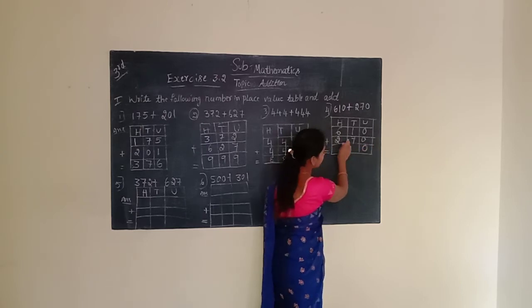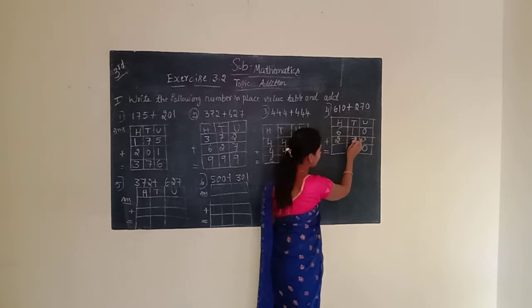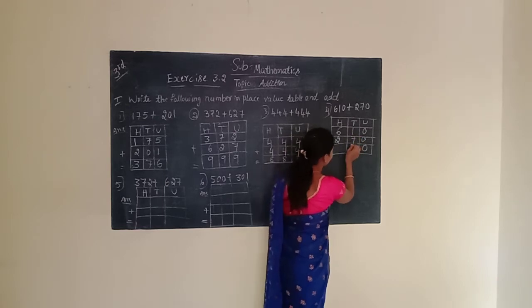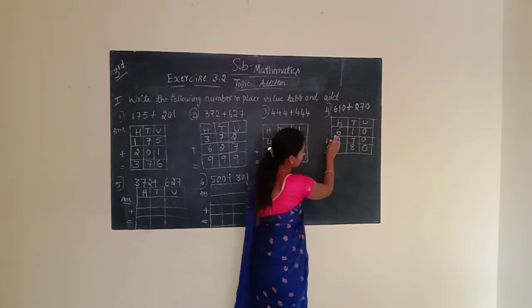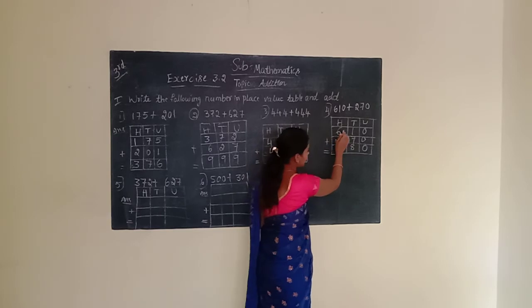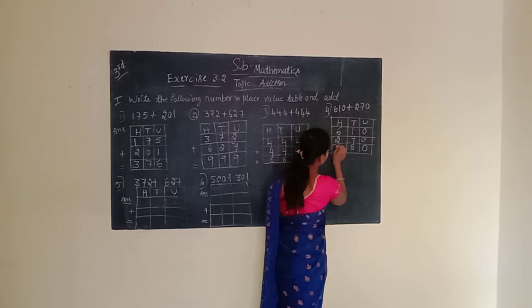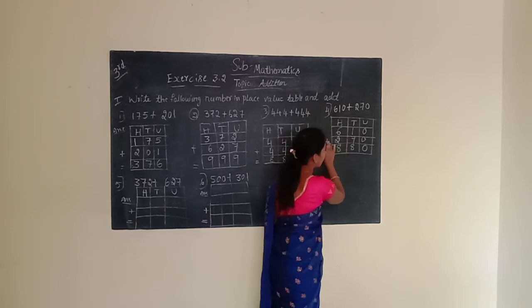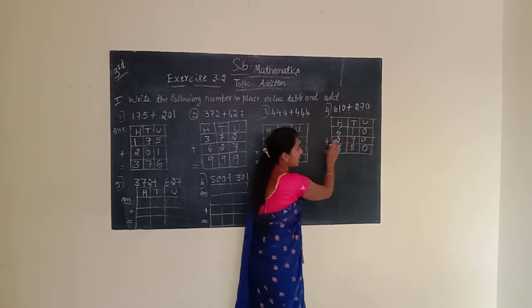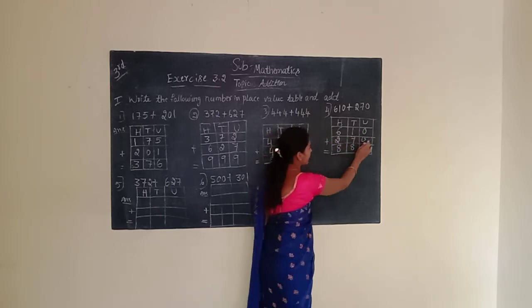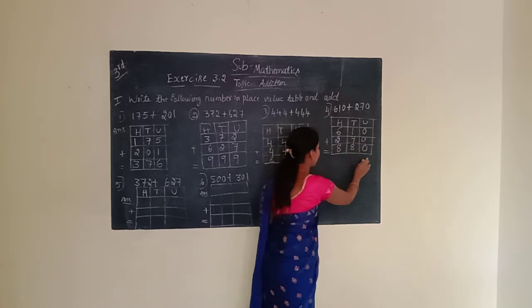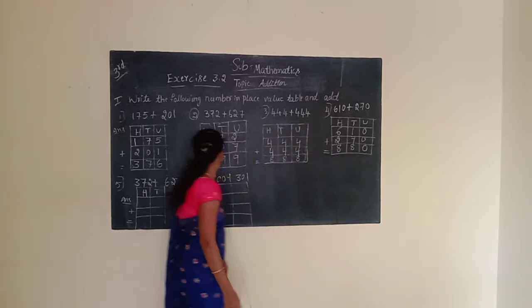Next, move to the tens place. Tens place is having 1 and 7. 1 plus 7 is 8. We have to write 8. Next, hundreds place. Hundreds place is having 6 and 2. 6 plus 2 is 8. We have to write 8. Given number is 610 plus 270 equals 880.